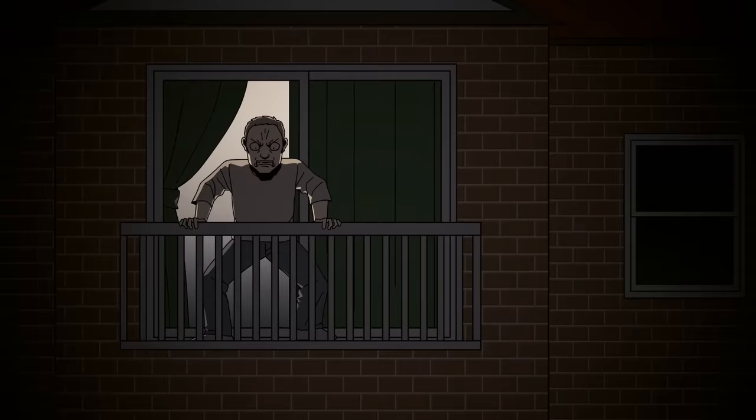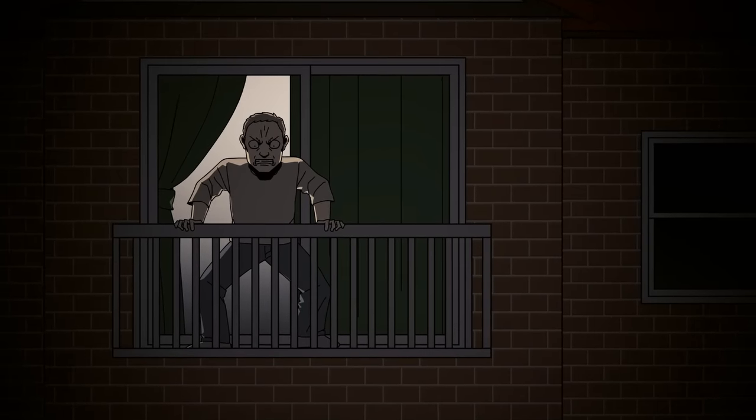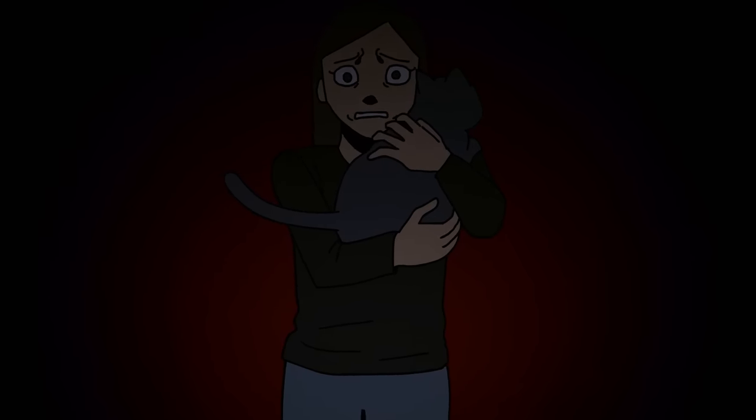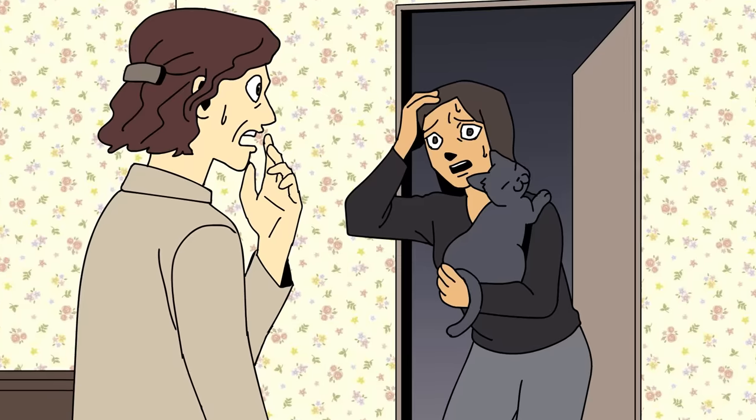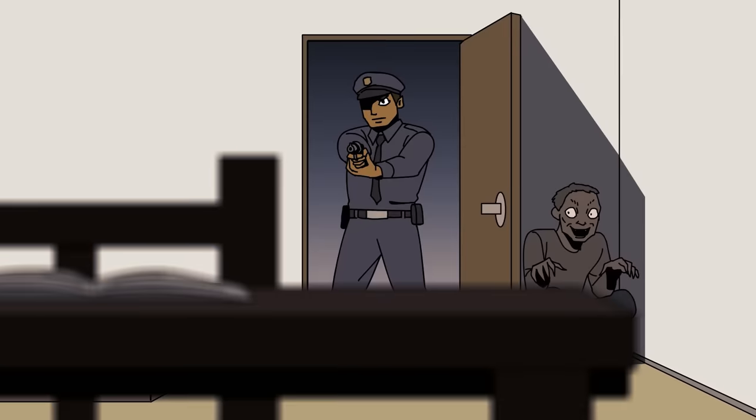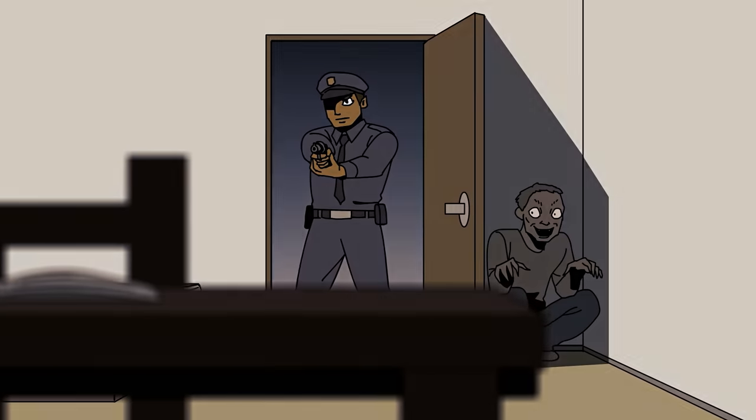I was so scared that I took my cat and ran out of the apartment. Once I got out of the building, I looked up at my balcony and saw the guy just staring at me with his eyes wide and an angry look on his face. I ran and ran for what felt like hours, until I eventually went back to the building and told my landlord about what happened. We called the police, and they caught the man inside my apartment. I never went back to that apartment ever again.